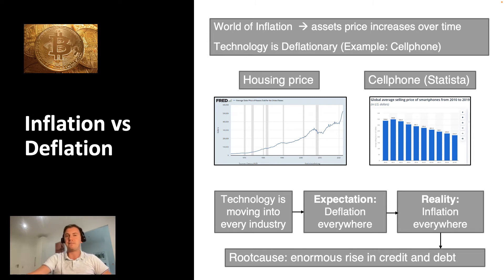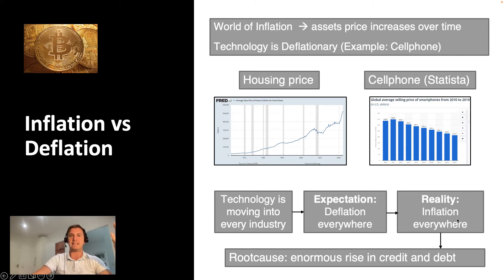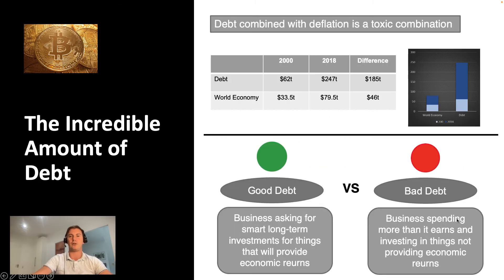Everything is mostly going up. All over the world, rent, housing prices, fuel, food, and many other costs are rising. But this is not natural. The rise in prices is artificial, driven by an enormous rise in credit and debt. It is the rise of credit and debt that is driving rising prices, and it is wrong that prices keep increasing year over year.